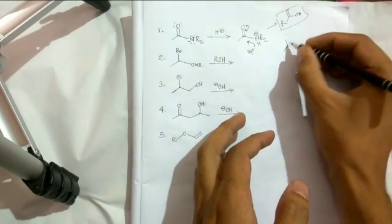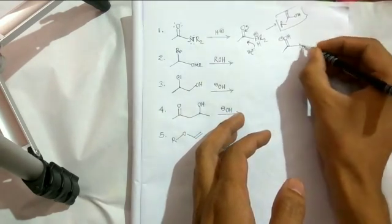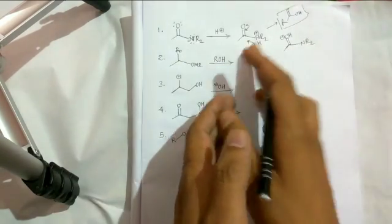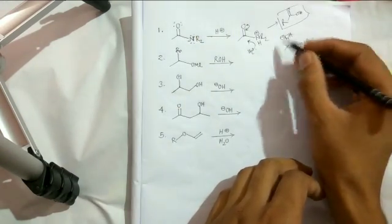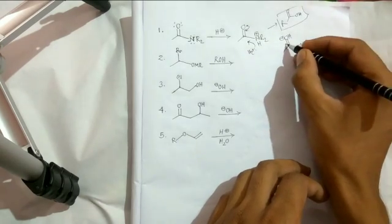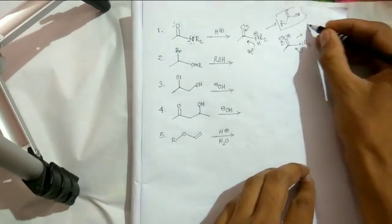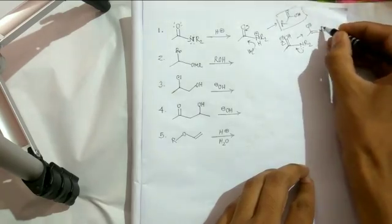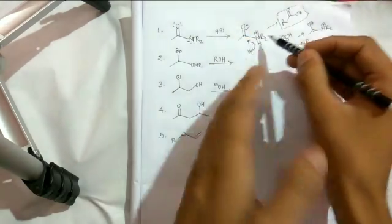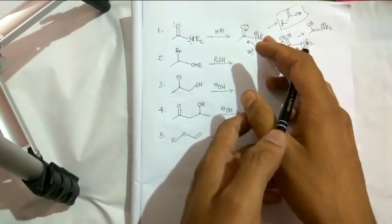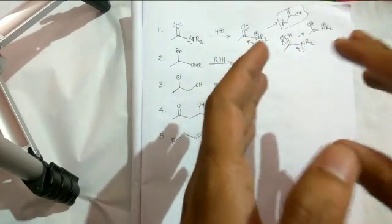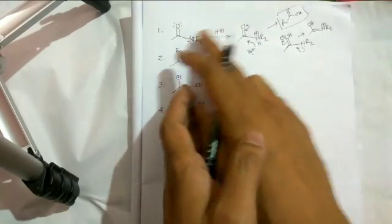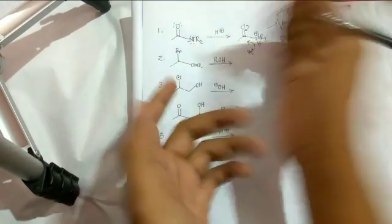When the amide gets protonated, it is not the nitrogen atom that is protonated first — it is the oxygen atom that gets protonated. The reason is that you can stabilize this cation through the nitrogen lone pair, which participates in resonance to give another resonating structure. In the nitrogen-protonated form, you cannot write an equivalent resonating structure, so the oxygen-protonated form is much more stable.